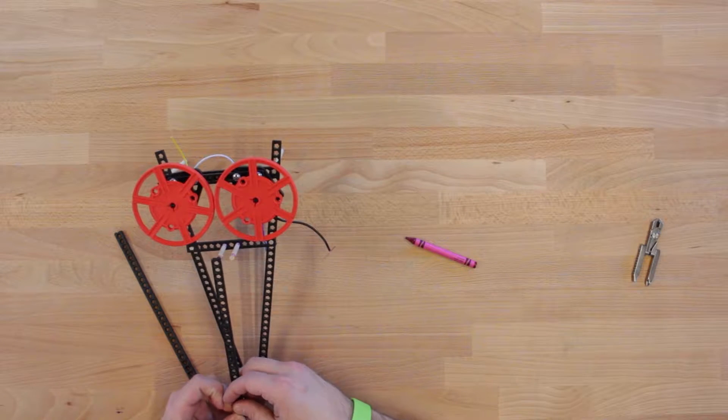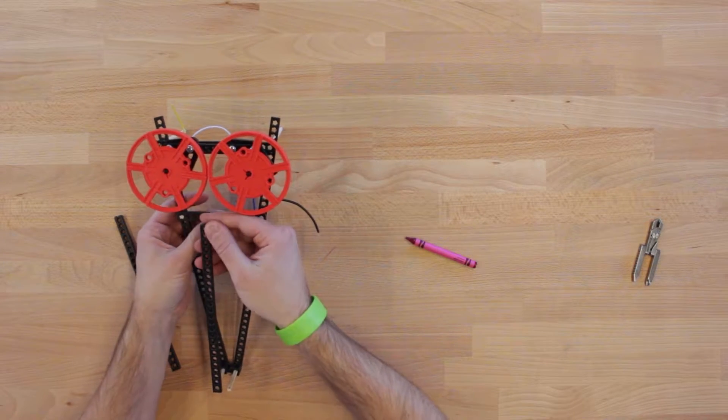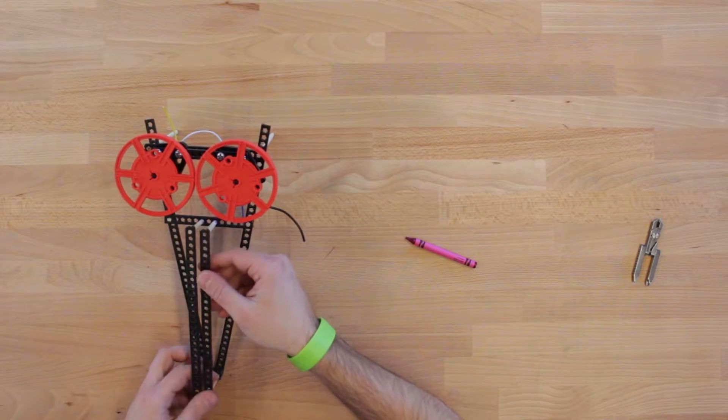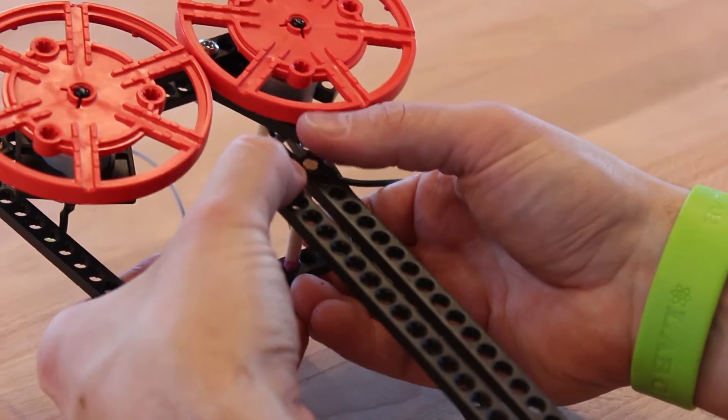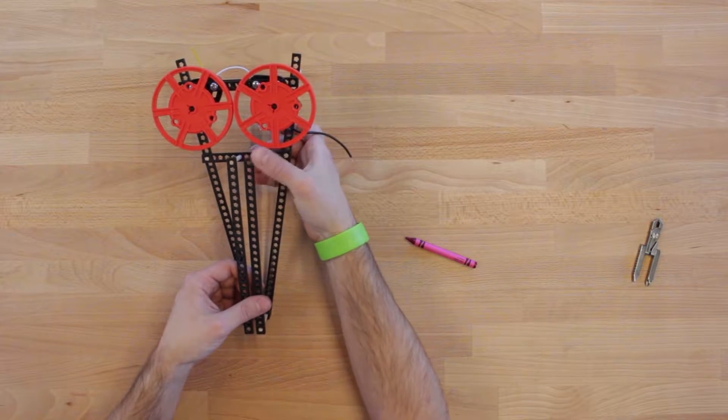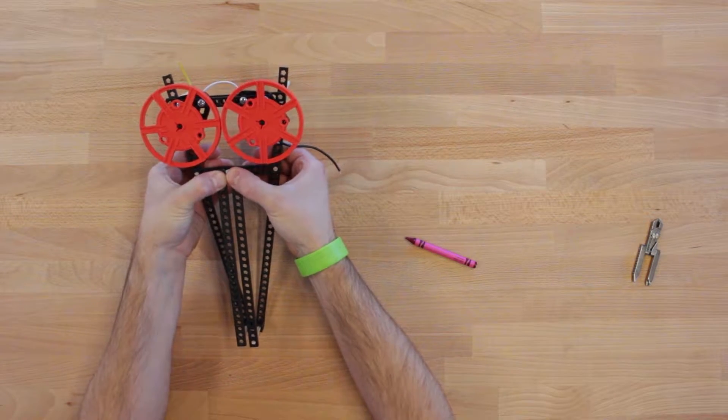Then connect these dowels you just installed and the two-inch dowels on the end with your 26-hole black plates. Once again, push them on until they're flush. These will act as guides guiding the paper airplane in between the two wheels.